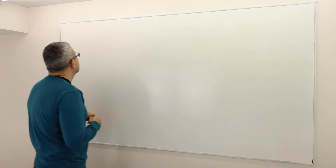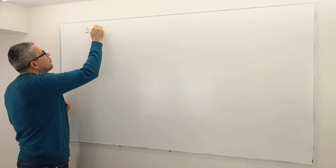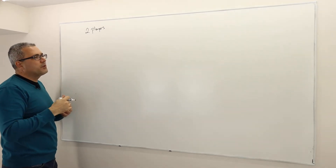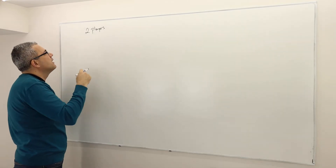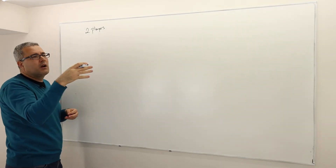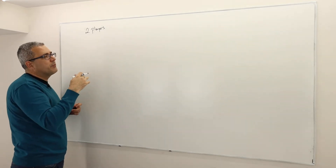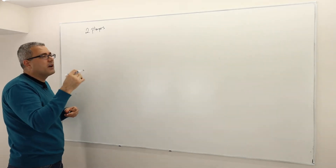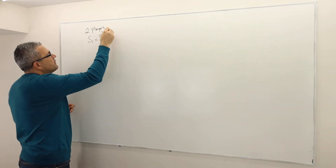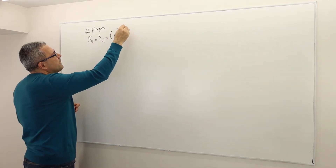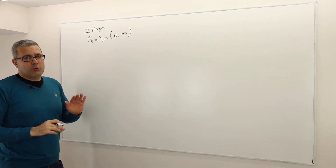So here's how the game is. There are two players, player one and player two. Each player is simultaneously and independently choosing a number between zero to infinity — while infinity is not a number, so basically they are picking a strictly positive real number. S1 and S2, the set of strategies, are equal to the open interval (0, ∞).